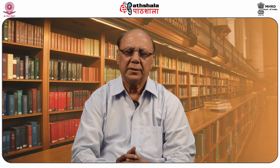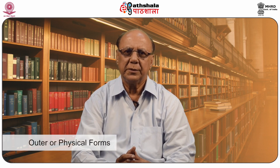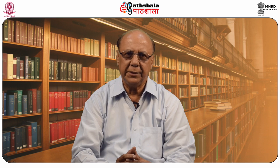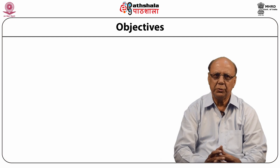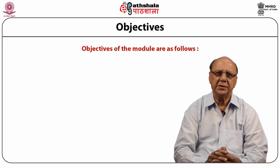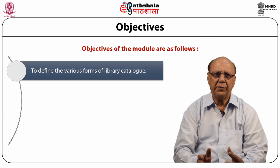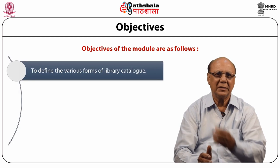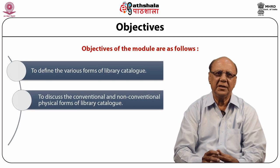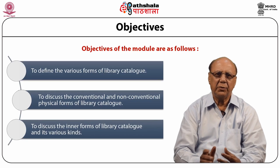The forms of library catalog can be studied by dividing it into two forms: first, outer or physical forms of library catalog; second, kinds or inner forms of library catalog. The objectives of this module are: to define the various forms of library catalog, to discuss the conventional and non-conventional physical forms, and to discuss the inner forms of library catalog and its various kinds.